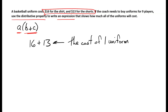So now I have an expression for the cost of one uniform: 16 plus 13. If I multiply that expression by nine I'll have an expression for the cost of nine uniforms. And since I want my answer to be in the form of the distributive property expression A times B plus C, I'm starting to think I know what my answer is going to look like.